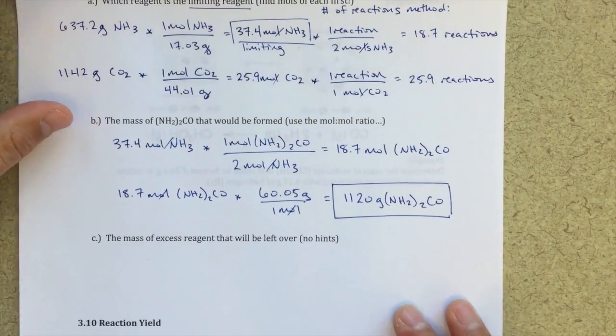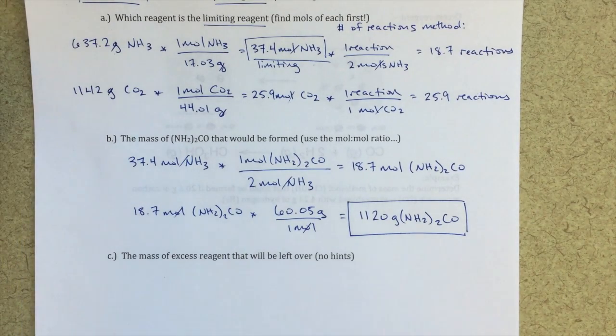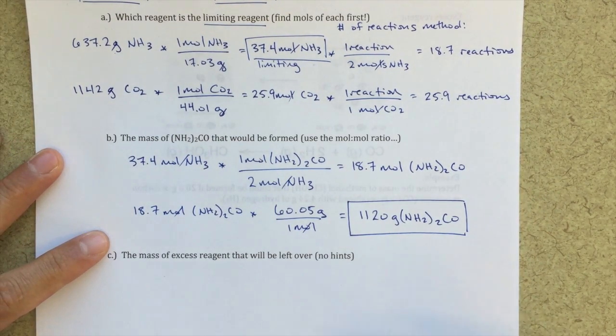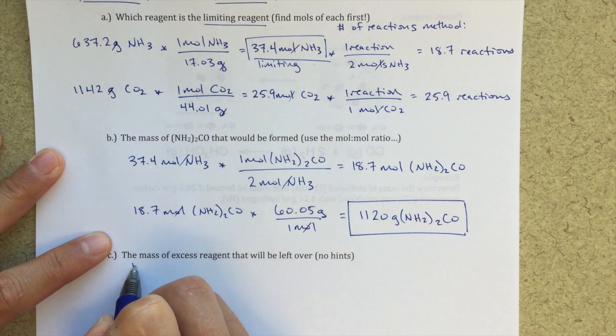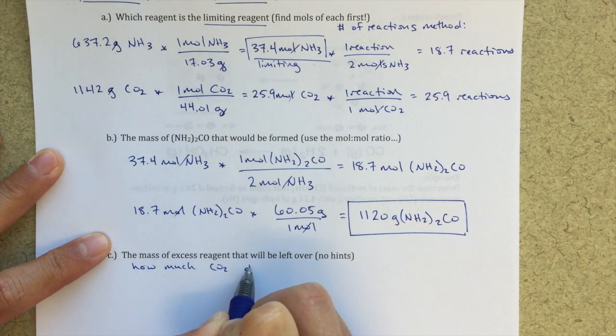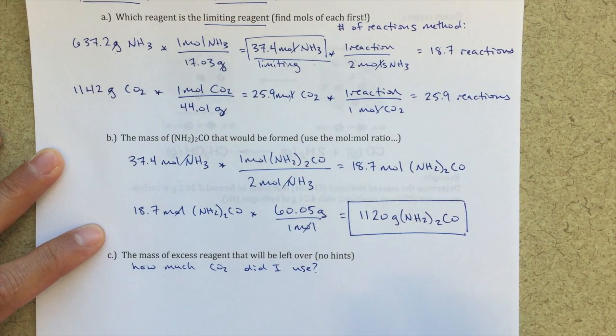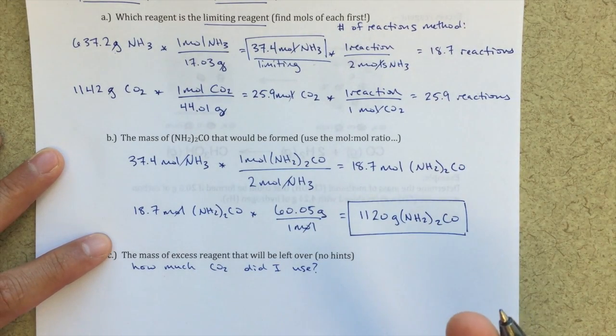Okay. The last part here, the mass of excess reagent that will be left over. And I'm not giving you any hints on this one. So the question here is CO2 is my excess reagent. I'm going to have extra CO2, and I want to know how much extra I'm going to have. So really this question is asking, how much CO2 did I use? Right. Because if I know how much I used, then I can subtract that from how much I started with, and that will be the amount that's excess.